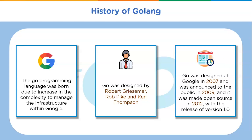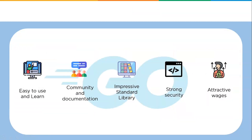Go was announced to the public in 2009 and made open source in 2012 with the release of version 1.0. The most remarkable release, Golang 1.5, was presented in August 2015 and included considerable changes — the compiler toolchain was converted from C to Go entirely. At this stage, Golang took the form its authors aspired to.